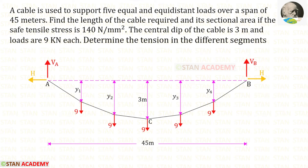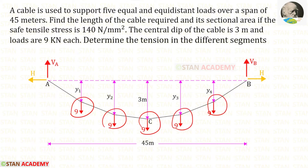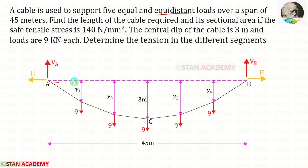Hello everyone. Today we are going to do a problem based on suspension cables. Let us read the question and draw the diagram. A cable is used to support five equal and equidistant loads over a span of 45 meters. The span is given as 45 meters. There are five equal loads, and the loads are equidistant, meaning the distance to and from the loads should be the same.